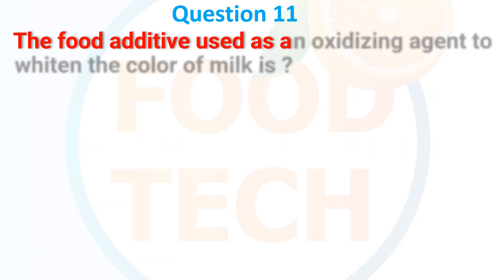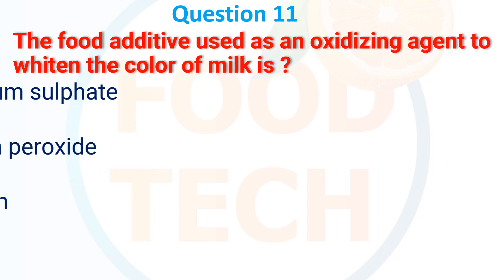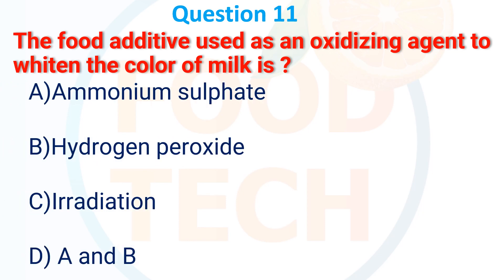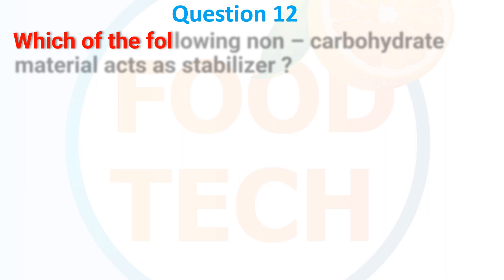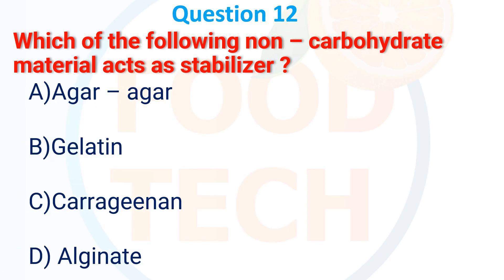The food additive used as an oxidizing agent to whiten the color of milk is: A. Ammonium sulfate, B. Hydrogen peroxide, C. Irradiation, D. A and B. The answer is B. Hydrogen peroxide.